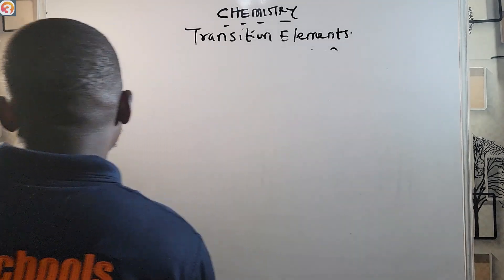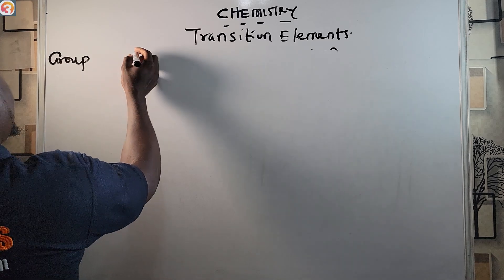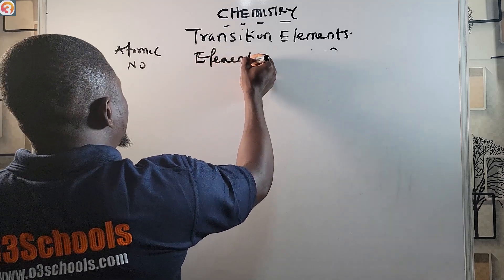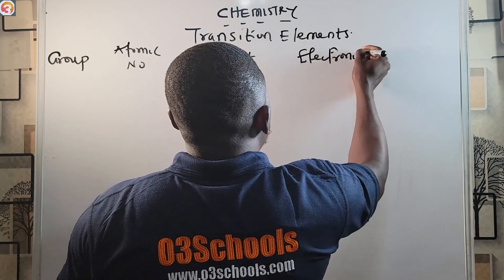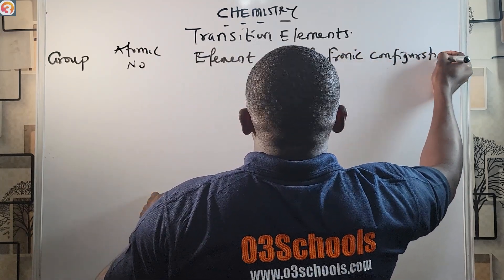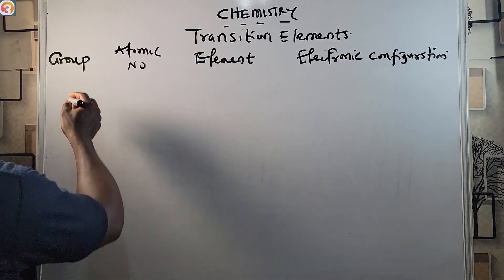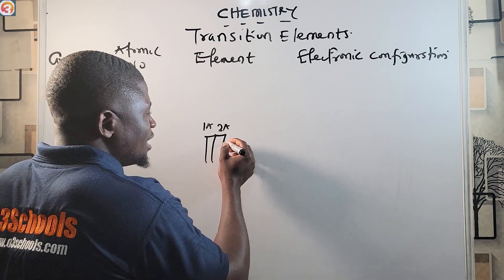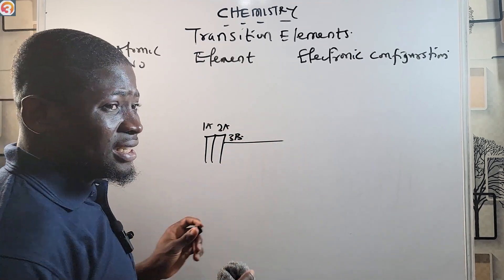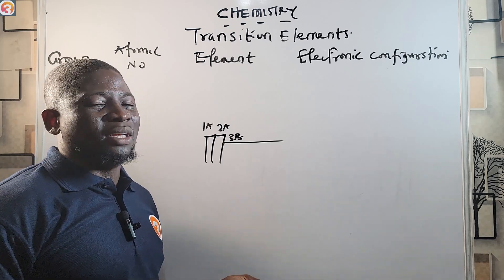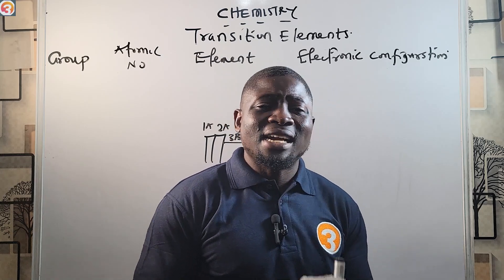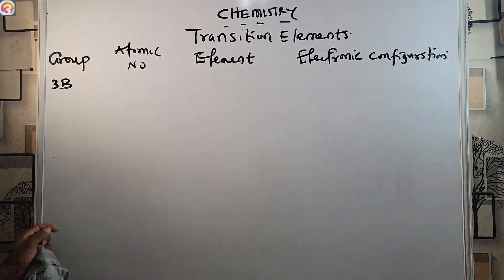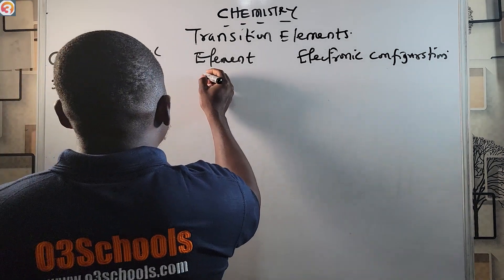Let's set up a table with: Group, Atomic Number, Element, and Electronic Configuration. The first group in the transition elements is group 3B, and the first element is atomic number 21, which is Scandium.